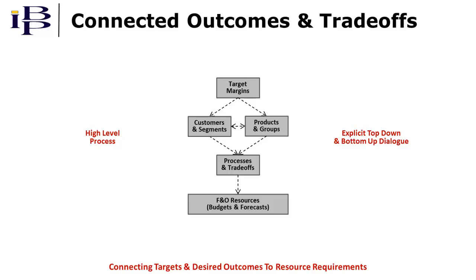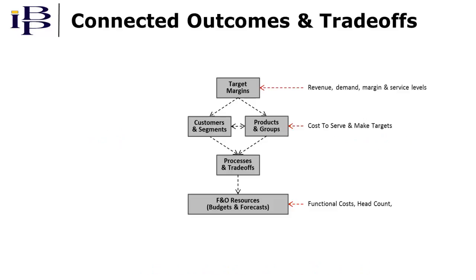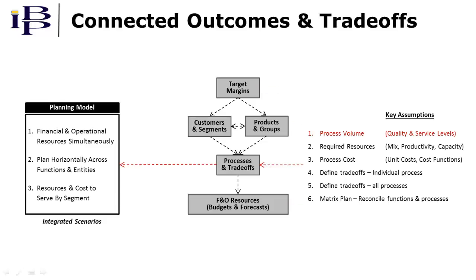Connected outcomes and trade-offs is a high-level planning approach that supports an explicit top-down and bottom-up dialogue, one that also results in vast improvements in planning cycle time. It starts by translating overall targets into those for product and customer segments, with a key focus on cost to serve and cost to make. These targets are then translated into financial and operational resources. A key enabler of this process are the planning model capabilities addressed in the integrated scenario video.